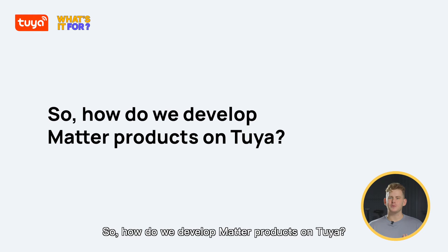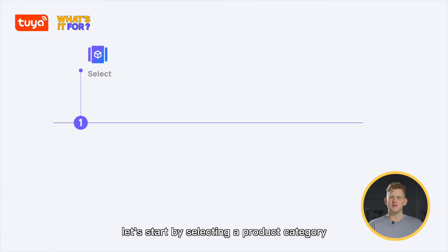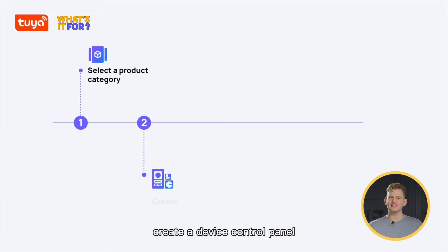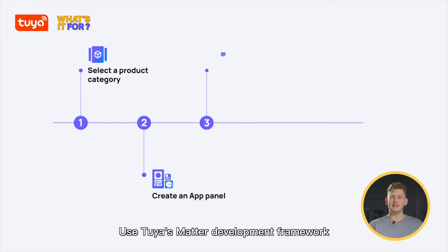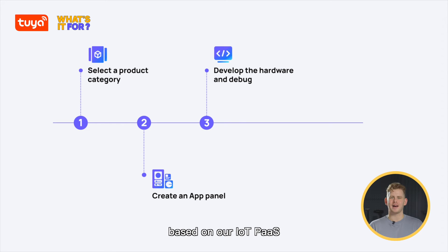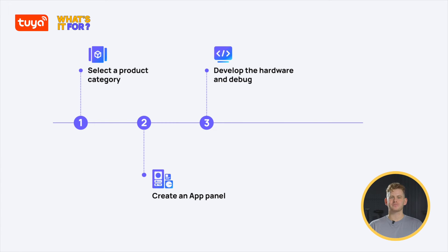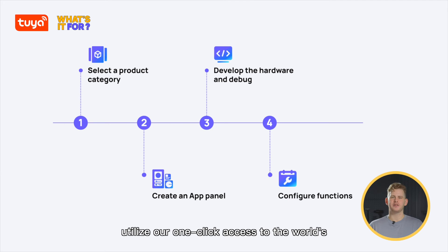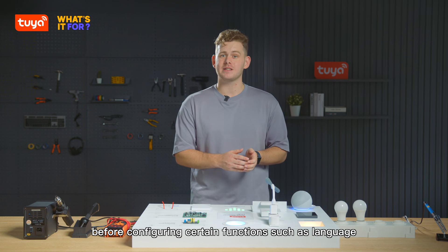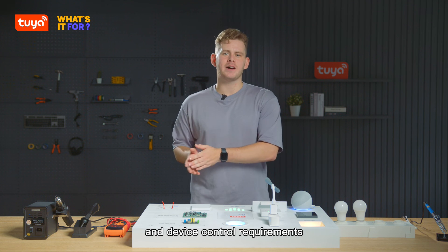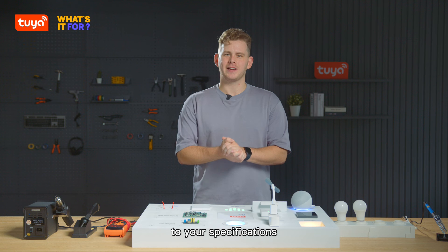So, how do we develop MATA products on Tuya? First, start by selecting a product category. Then, create a device control panel. Thirdly, use Tuya's MATA development framework based on our IAT pass to develop and test your MATA devices. Utilise our one-click access to the world's leading voice assistant platforms before configuring certain functions such as language and device control requirements to your specifications.